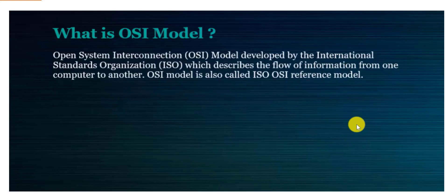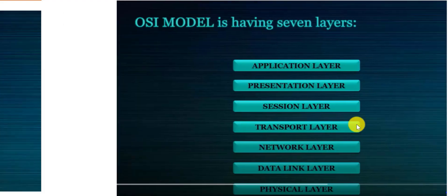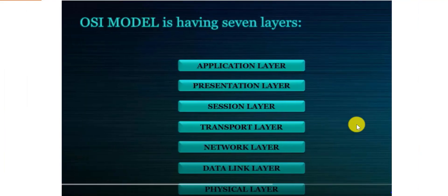Let's look at the seven different layers of the OSI. The OSI has seven layers numbered from the bottom up. The first layer is the Physical layer, second is Data Link, third is Network, fourth is Transport, fifth is Session, sixth is Presentation, and the seventh layer is Application.